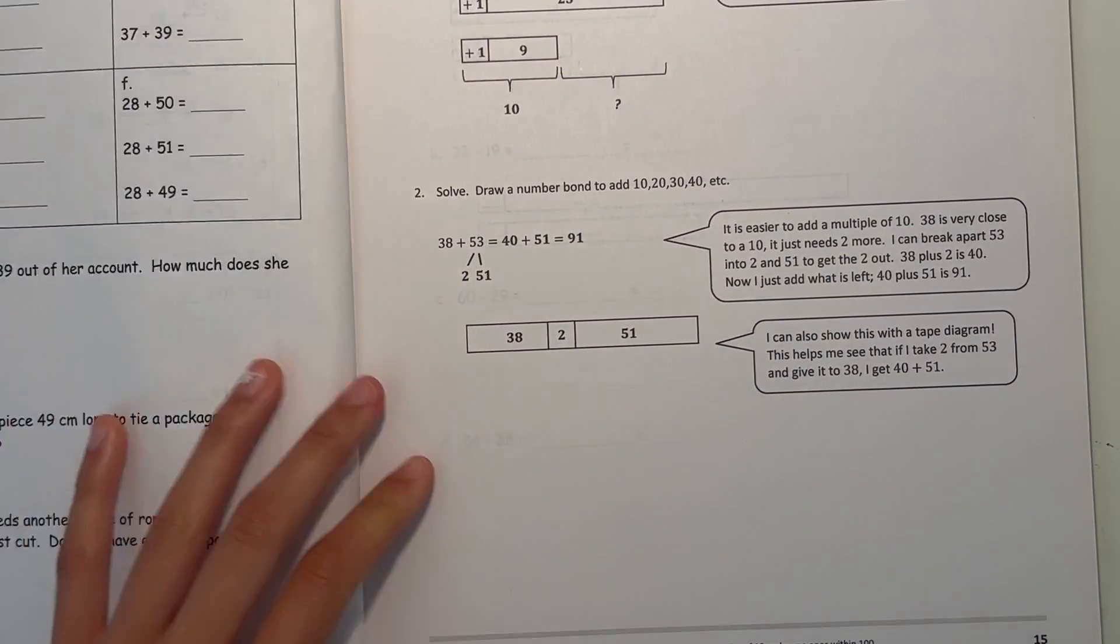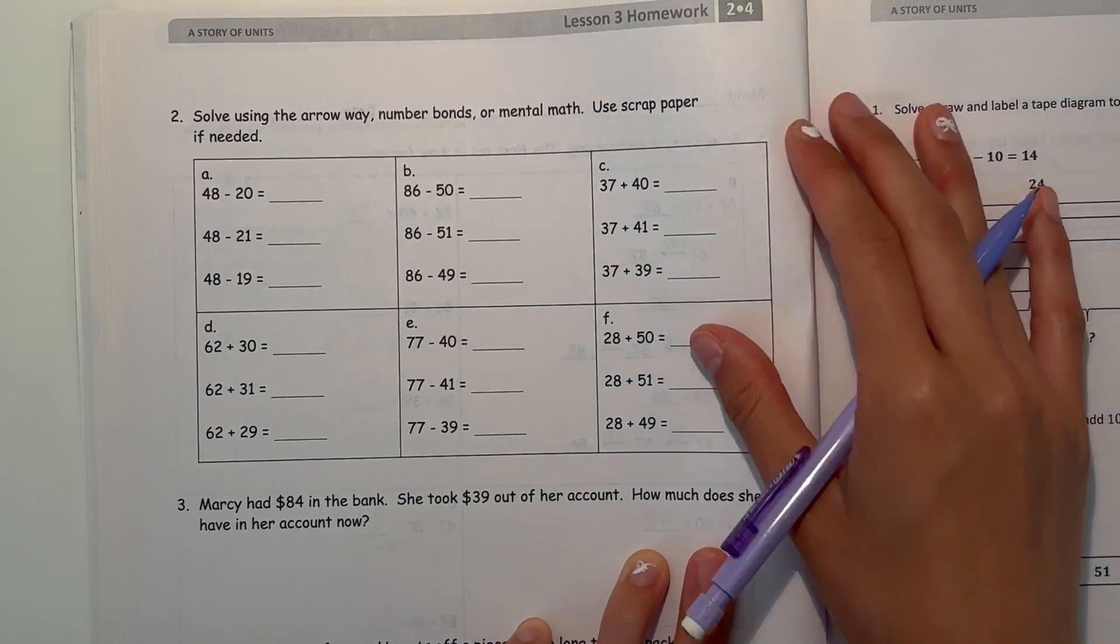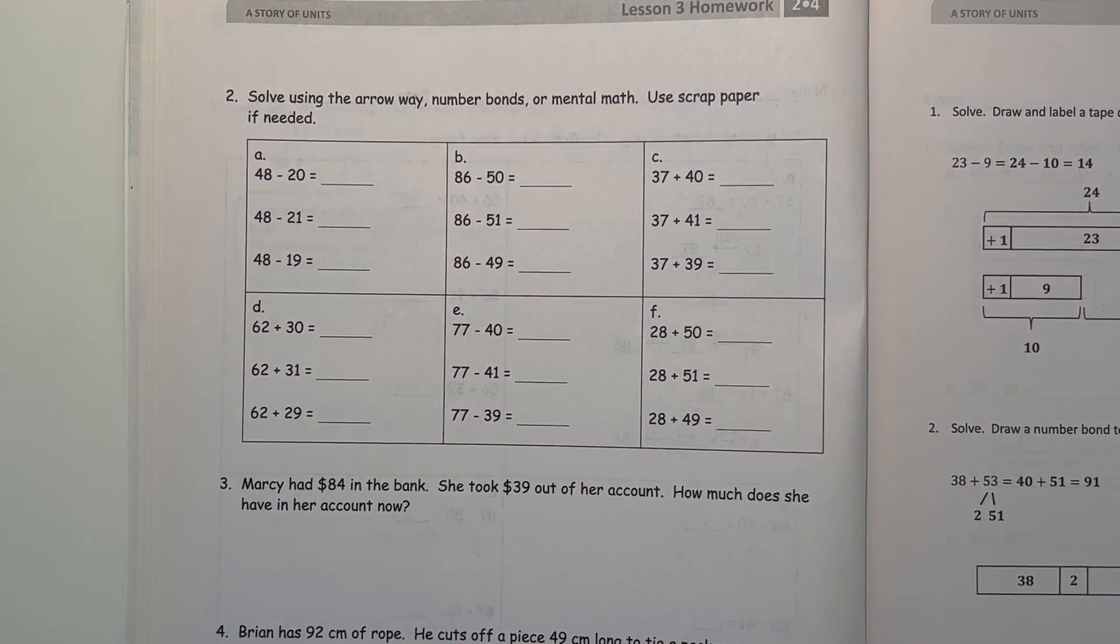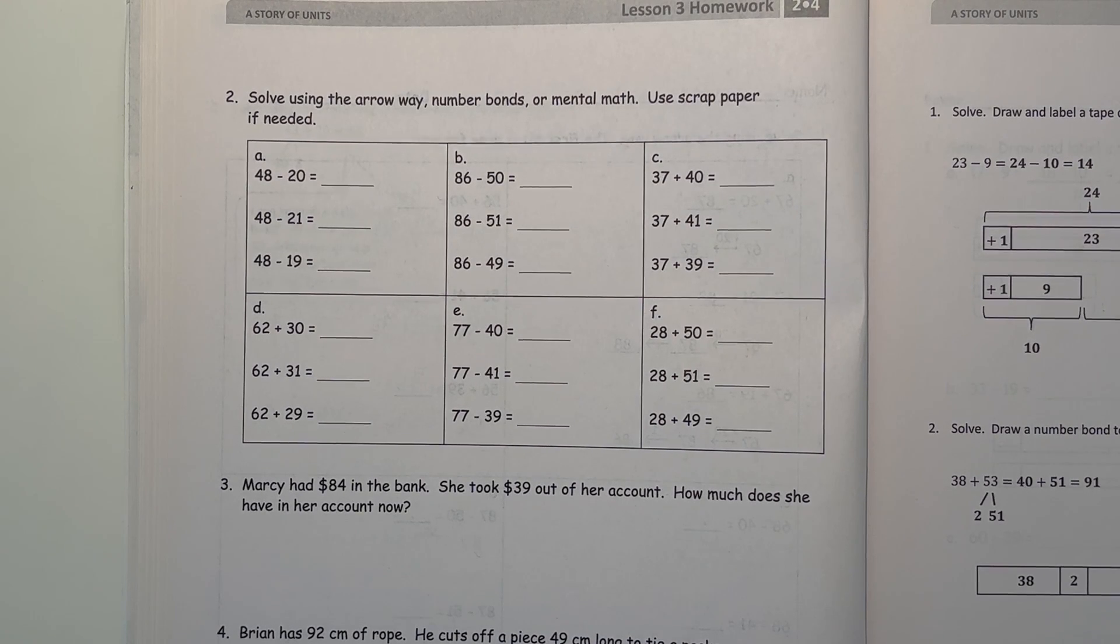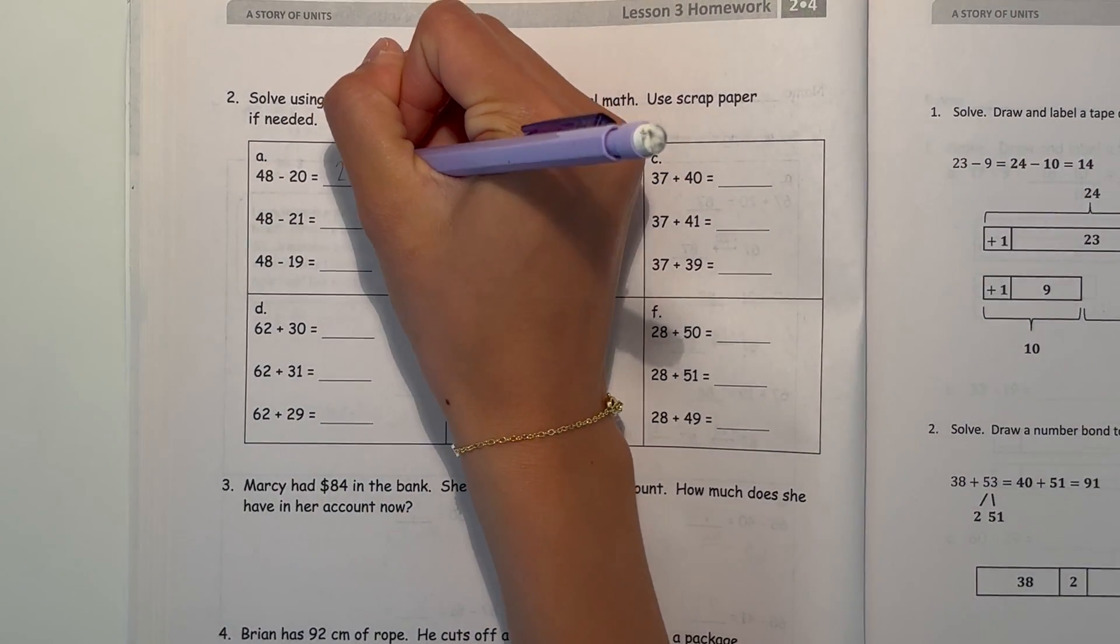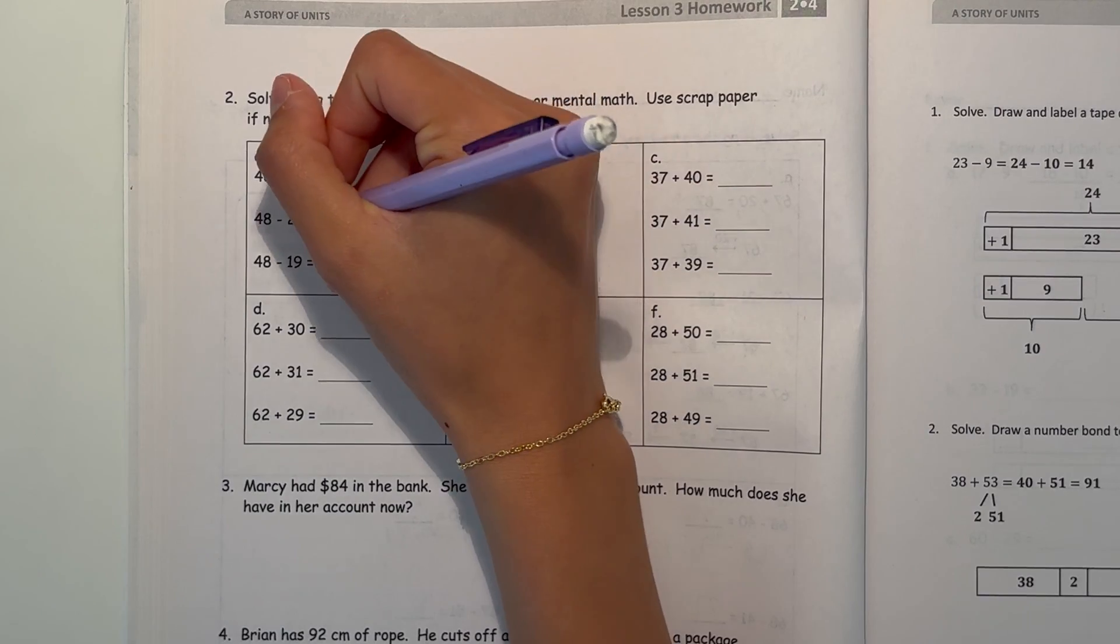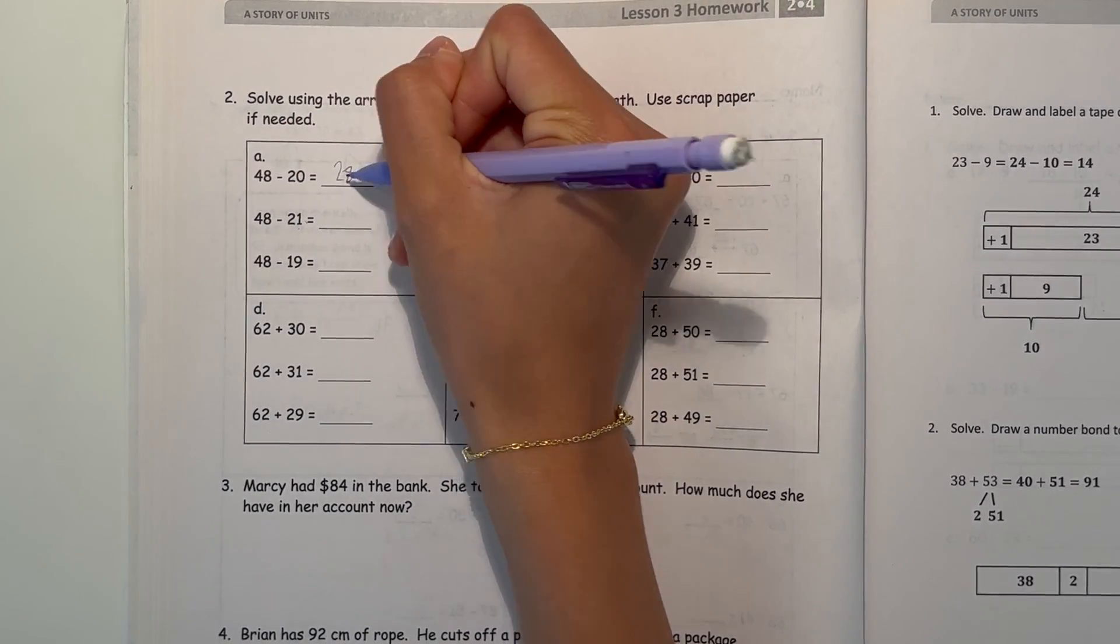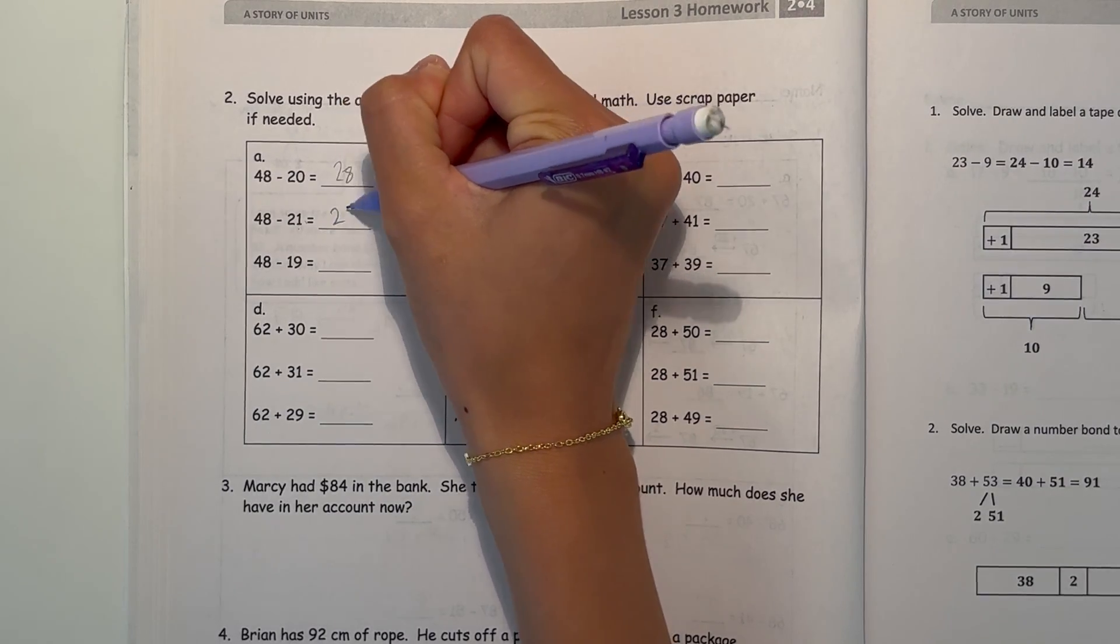Next page. Number 2, solve using the arrow way, number bonds, or mental math. Use scrap paper if needed. So A, 48 minus 20, I subtract 20, that's 28. So then 48 minus 21, you're subtracting one more, so then that should be one less than 28, which is 27.